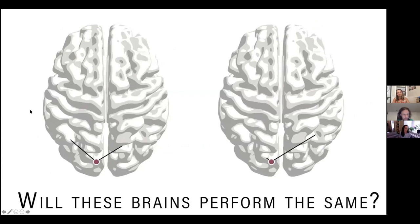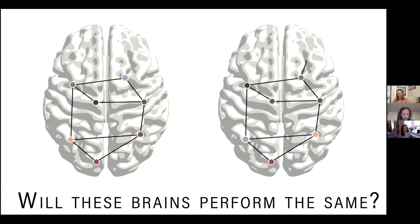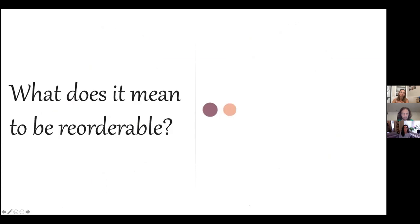So for example, this could be important for applications such as seizures. If you imagine a seizure spreading throughout the brain network, perhaps the ordering on the nodes and the topology that that ordering induces affects the seizure severity. So before we get too far ahead of ourselves, we have some fun toy examples, but let's talk a little bit more in-depth about what does it mean to be reorderable.